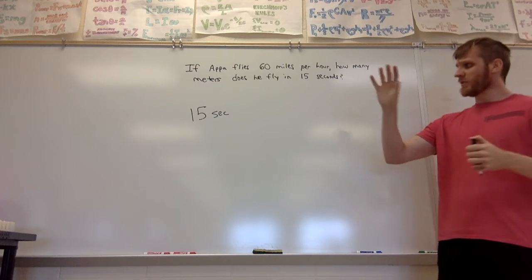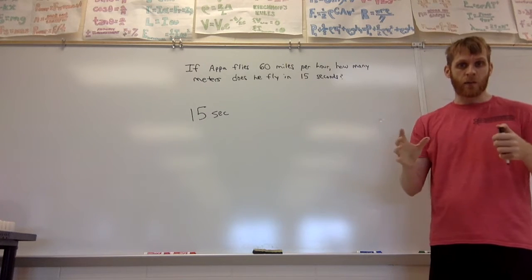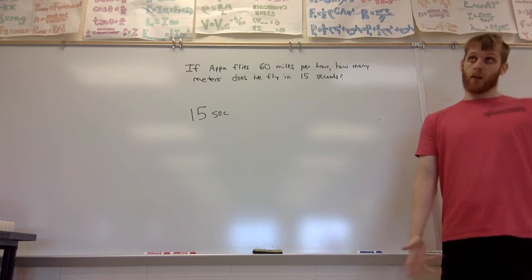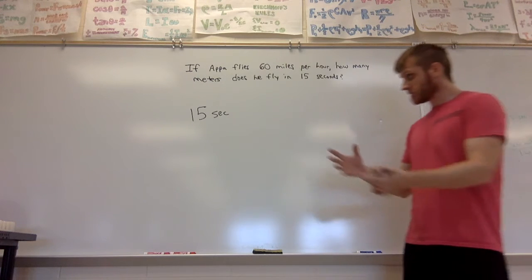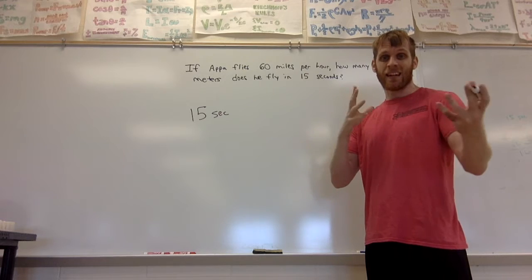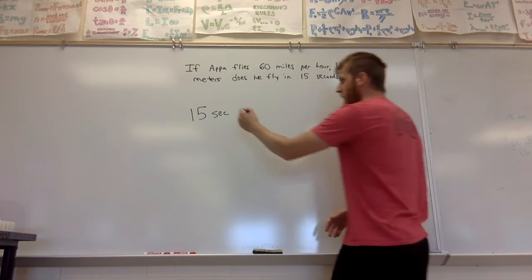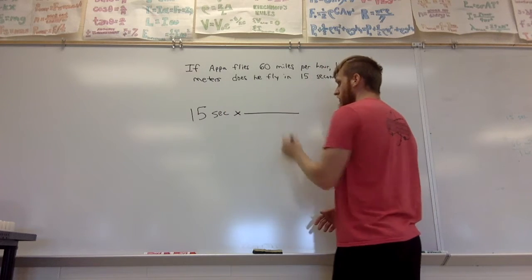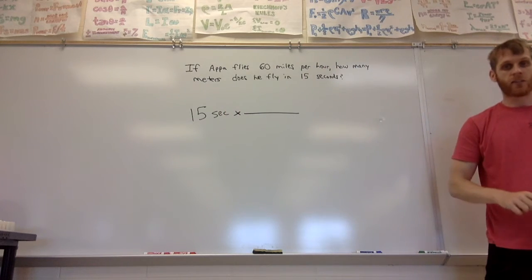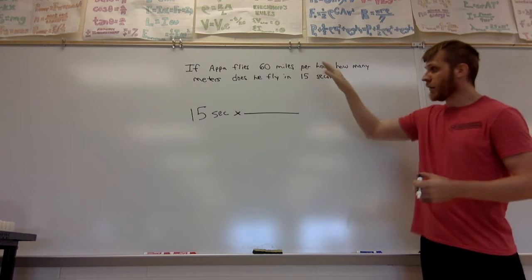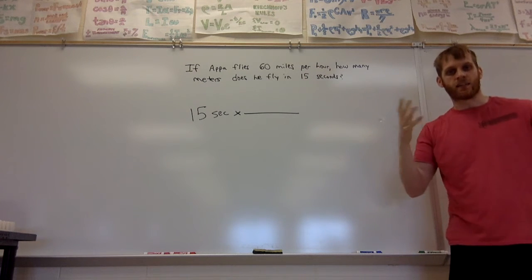Now we want to convert the 15 seconds to a distance in meters. How do we do that? We look at the conversion between distance and time, which is miles per hour. But before we use that, let's first look at the unit for time. Here we have seconds, but we need hours, so we need a conversion from seconds to hours.